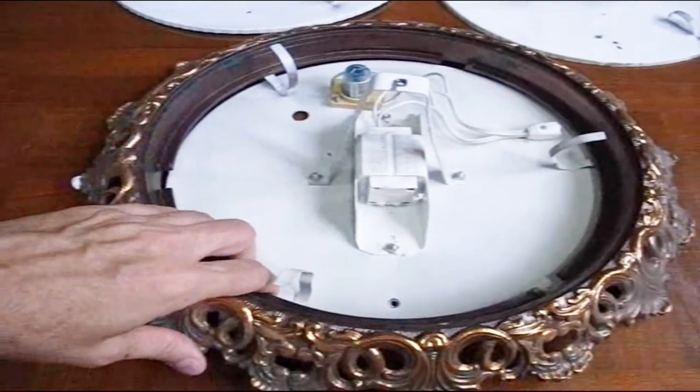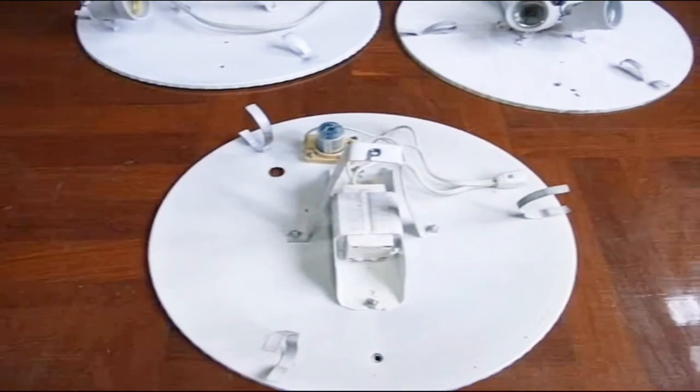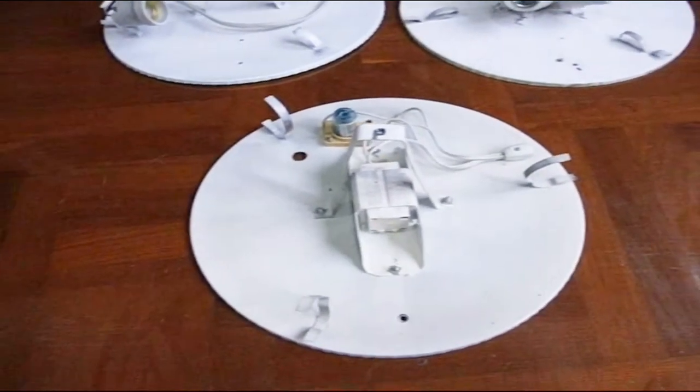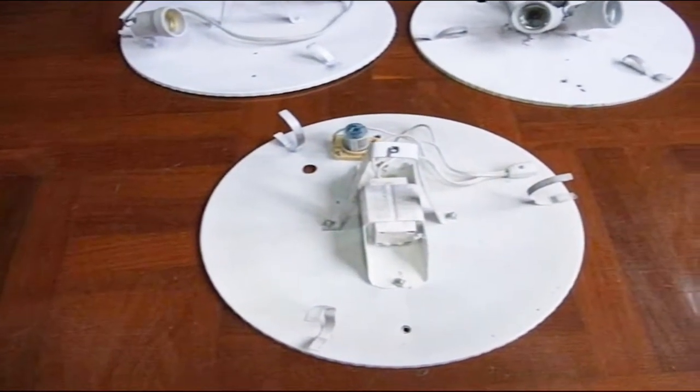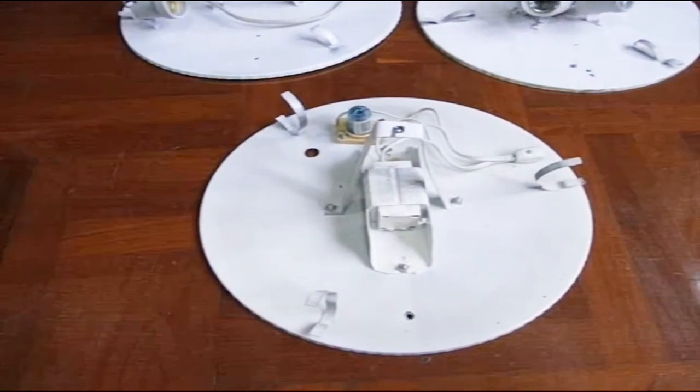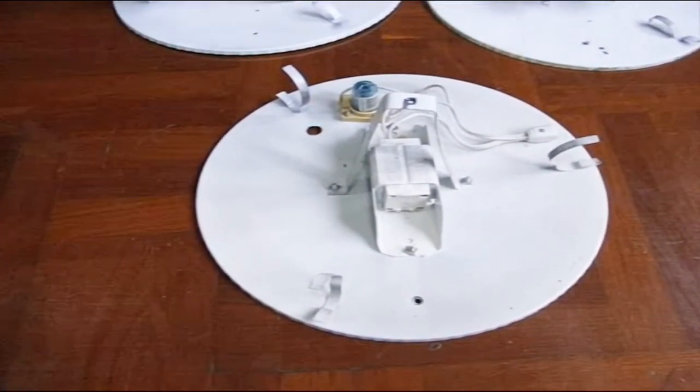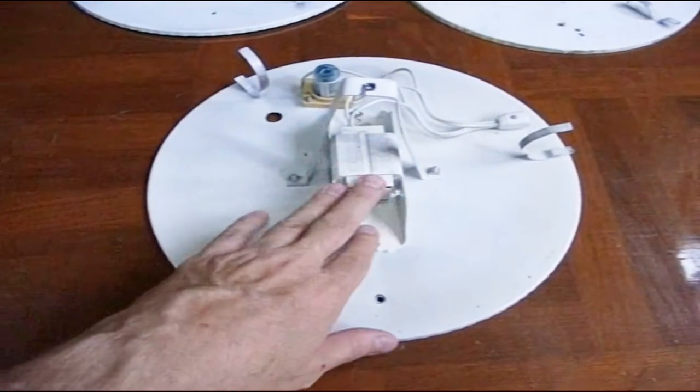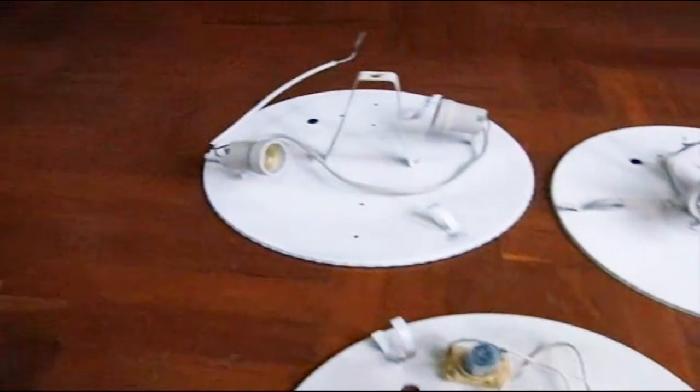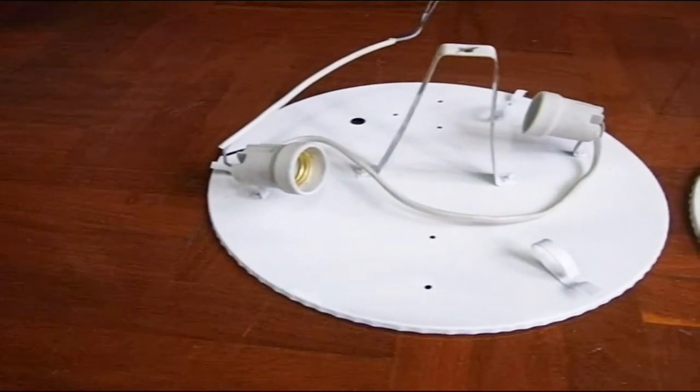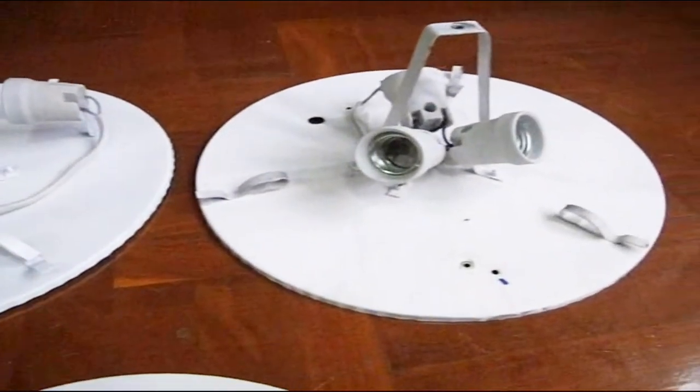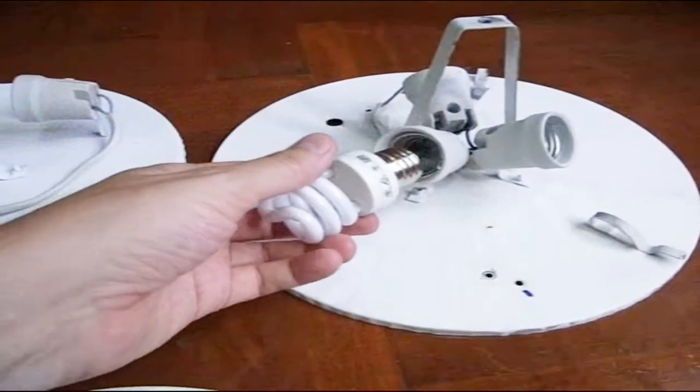What I did is I started converting these and cleaning them up. These are some spares that are left over from the conversion process. We have 28 of these things around the house. This old style was replaced with either this 2 socket or 3 socket variant using compact fluorescence.